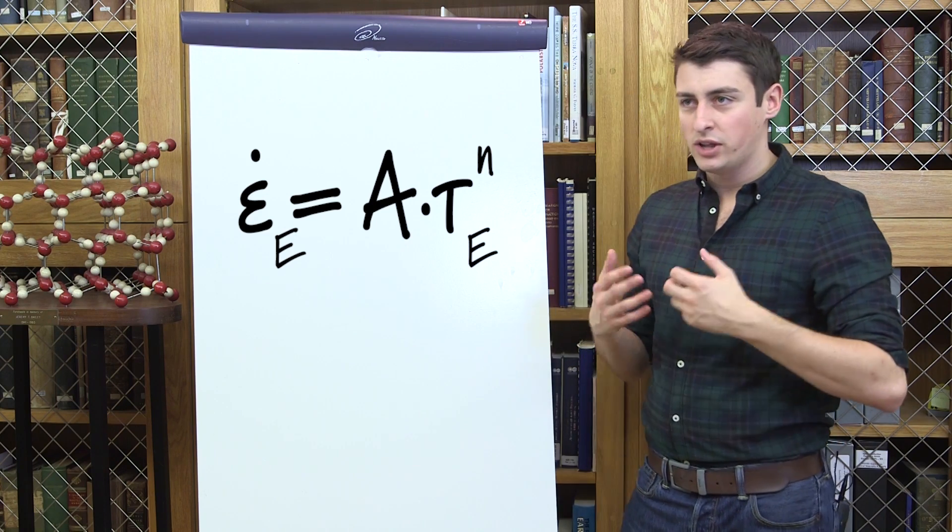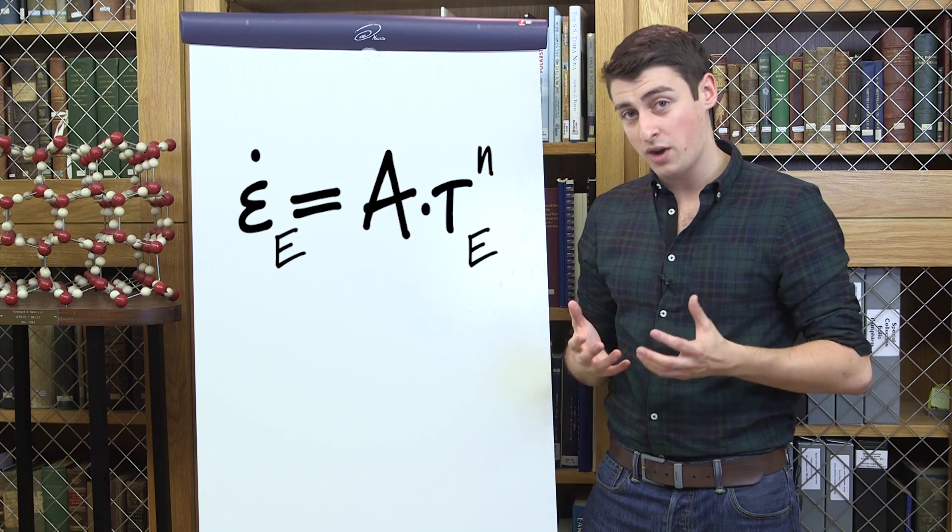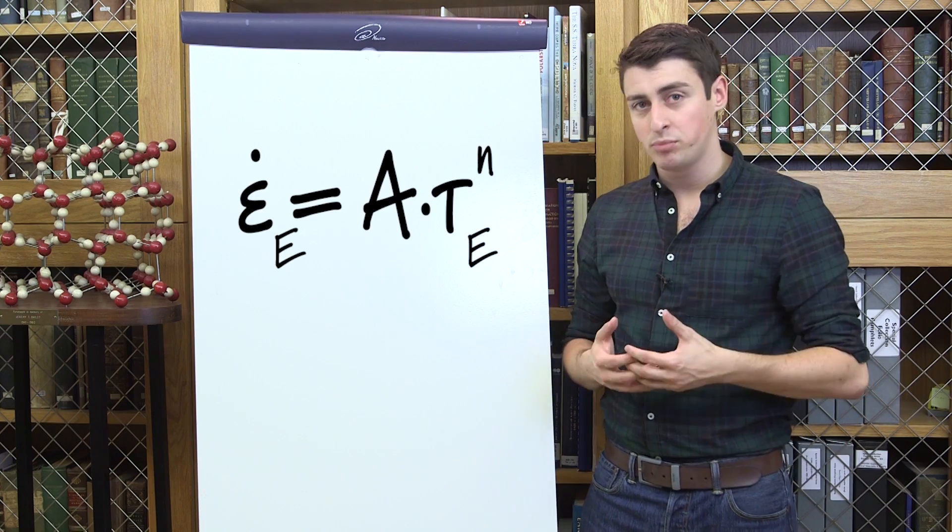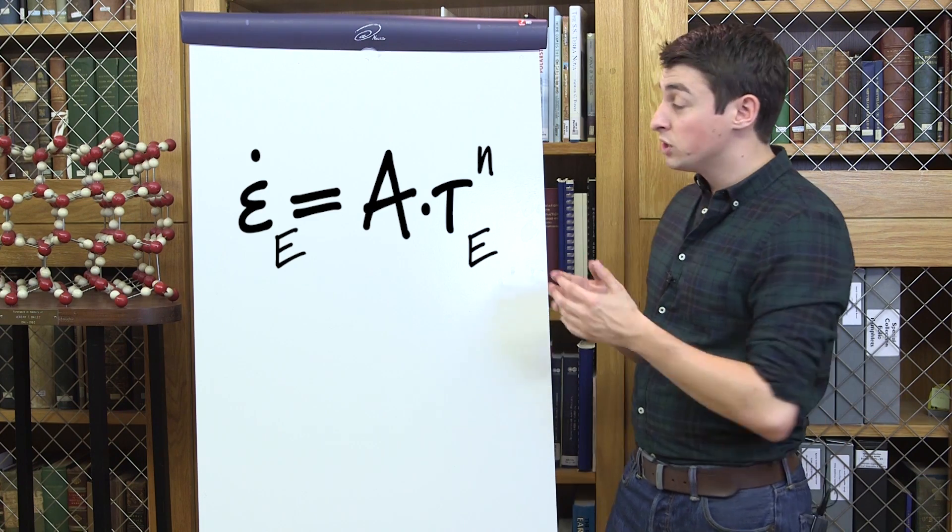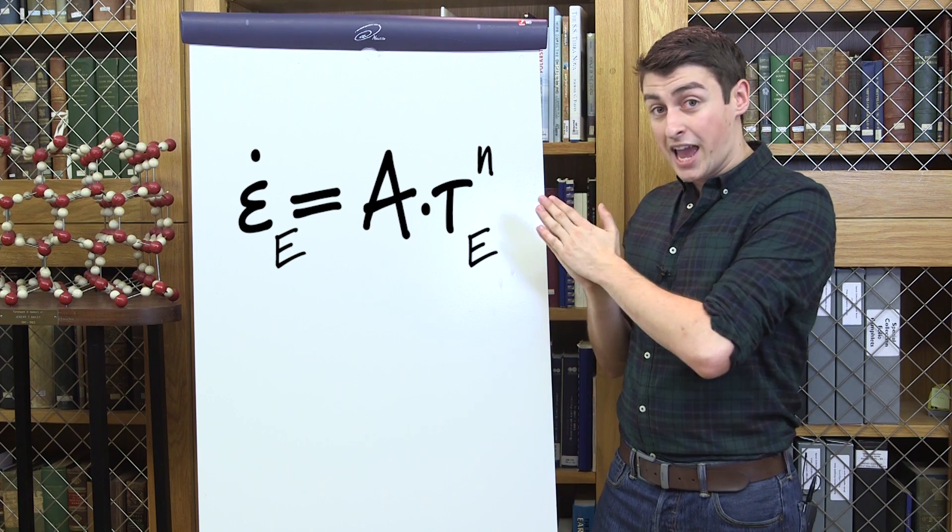And then this equals some number A. Now, A is what we call a parameter. It might not necessarily represent something physically directly, but it can depend on variables. And in this case, A very strongly depends on the temperature. In fact, it exponentially depends on the temperature. So, if you change the temperature of your ice, your glacier, a little bit, you change A a lot.